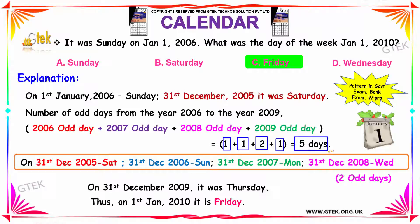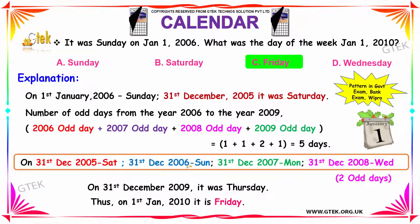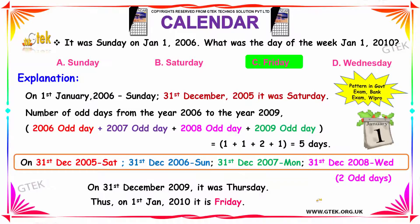Summing up, we get five odd days in total from 2006 to 2009. So Dec 31st 2005 is Saturday; Dec 31st 2006 would be Sunday; Dec 31st 2007 would be Monday; Dec 31st 2008 would be Wednesday (two odd days, since 2008 is a leap year); and Dec 31st 2009 would be Thursday. Therefore, Jan 1st 2010 would be Friday.